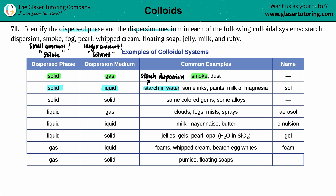The next one is fog. Fog is down here on the chart. Fog is a small amount of liquid placed into a large amount of gas — that liquid being water, which is generally what fog is. So the dispersed phase is liquid, and the dispersion medium is gas, which mainly gives the fog its appearance.